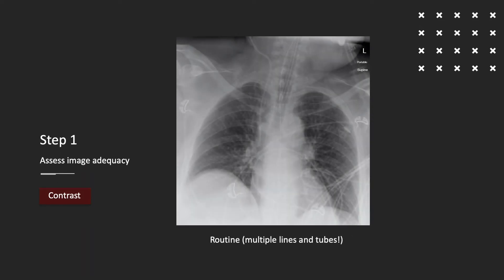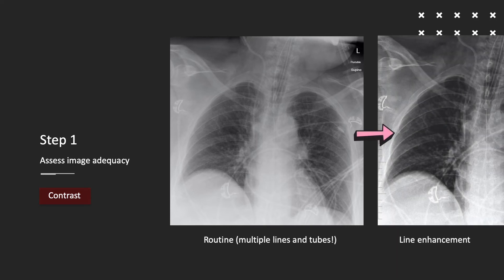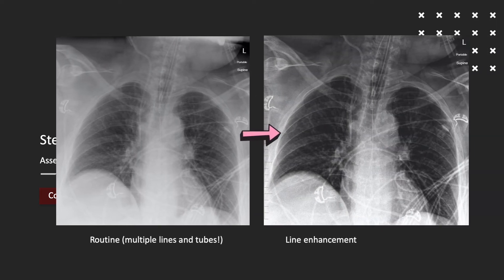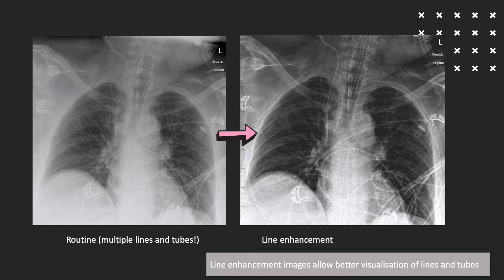Alternatively, look for a companion line enhancement image. These are images performed with a specific image processing algorithm that highlights tube and line features. The image is processed by the radiographer and may be available in some cases.